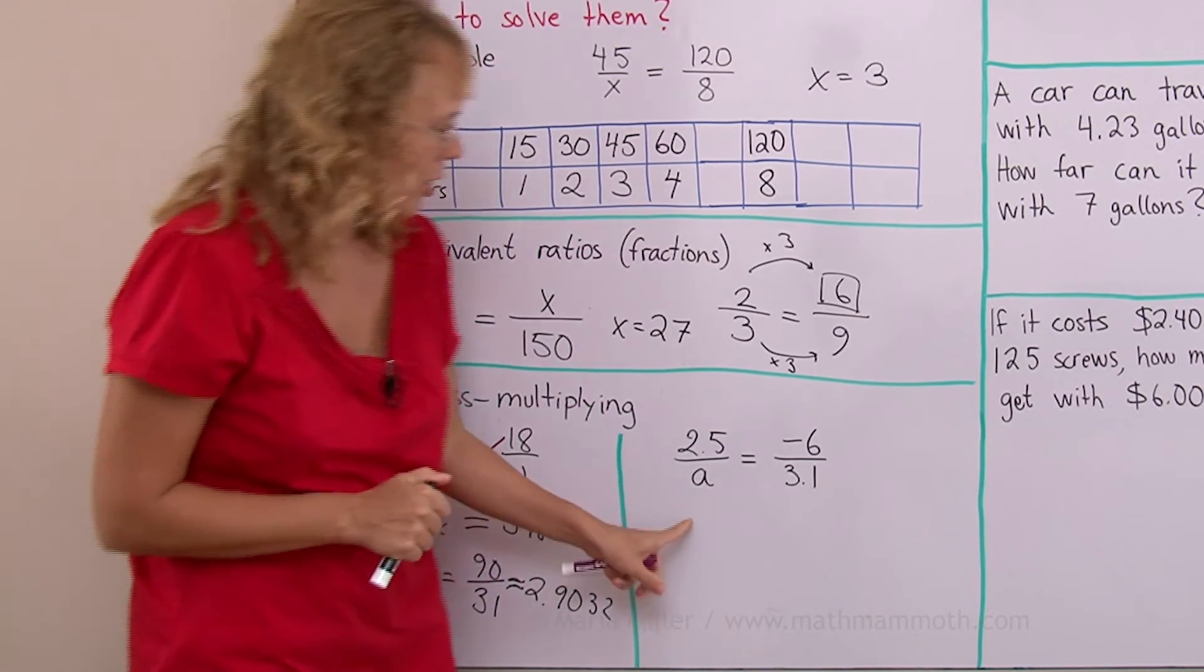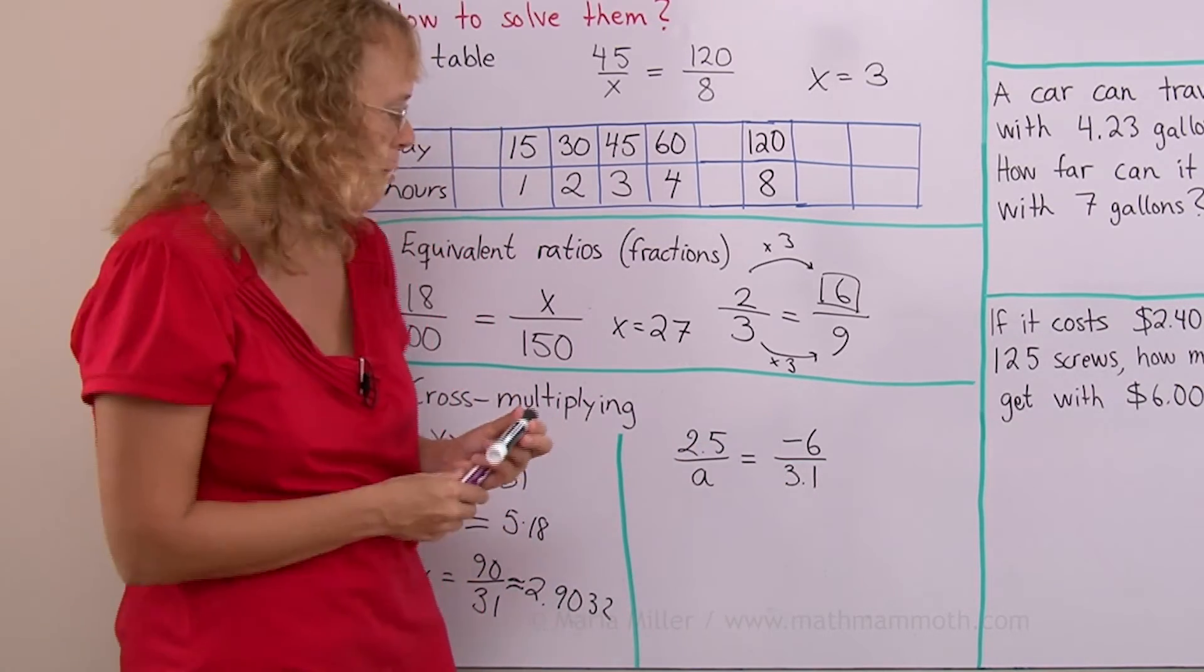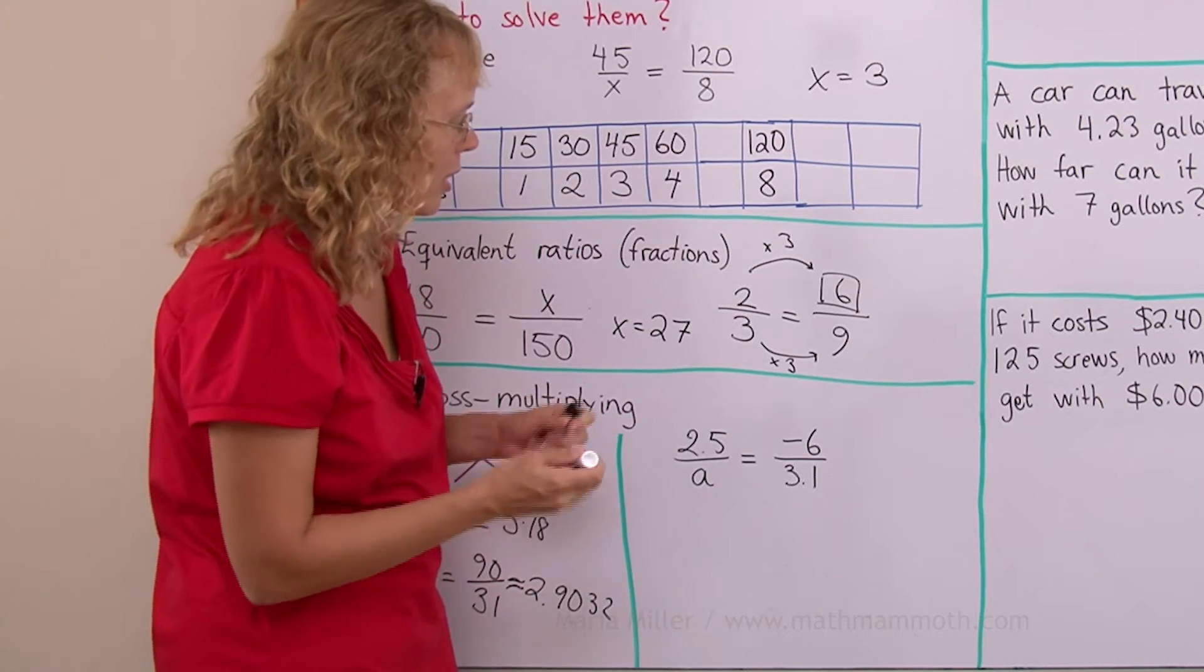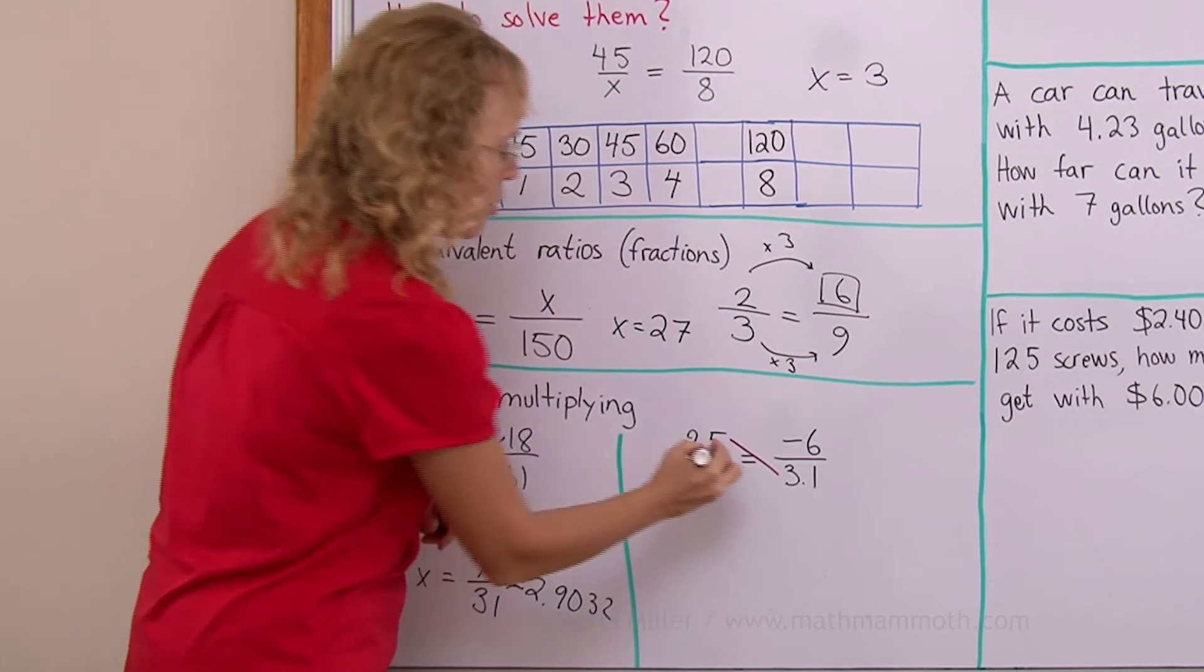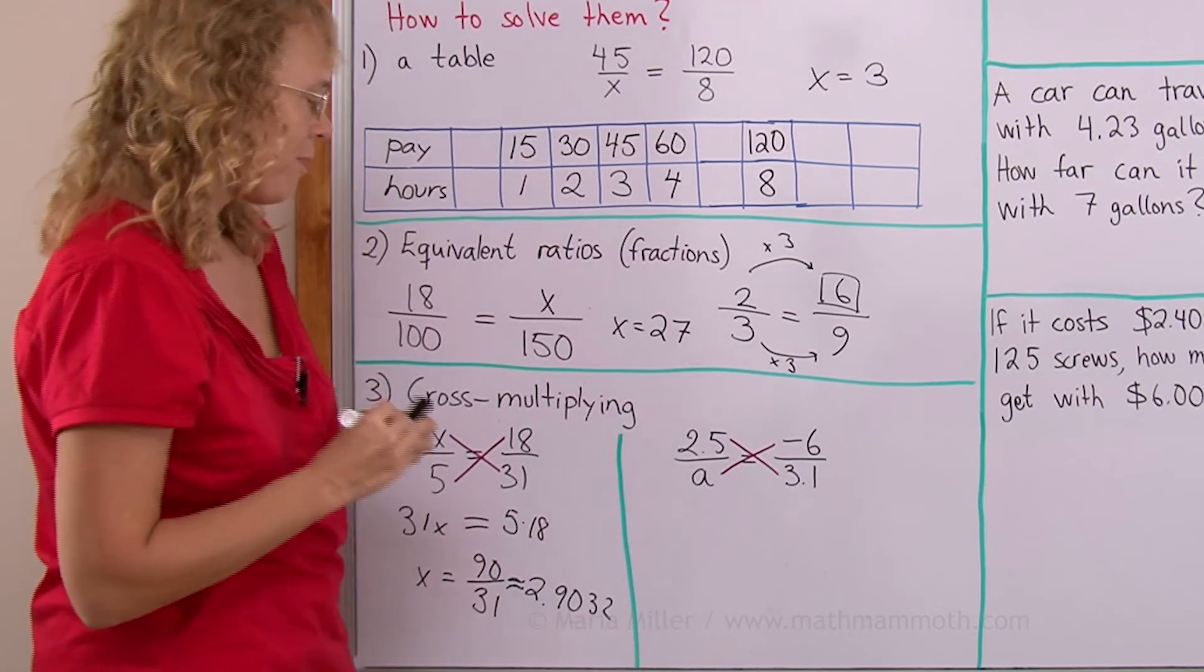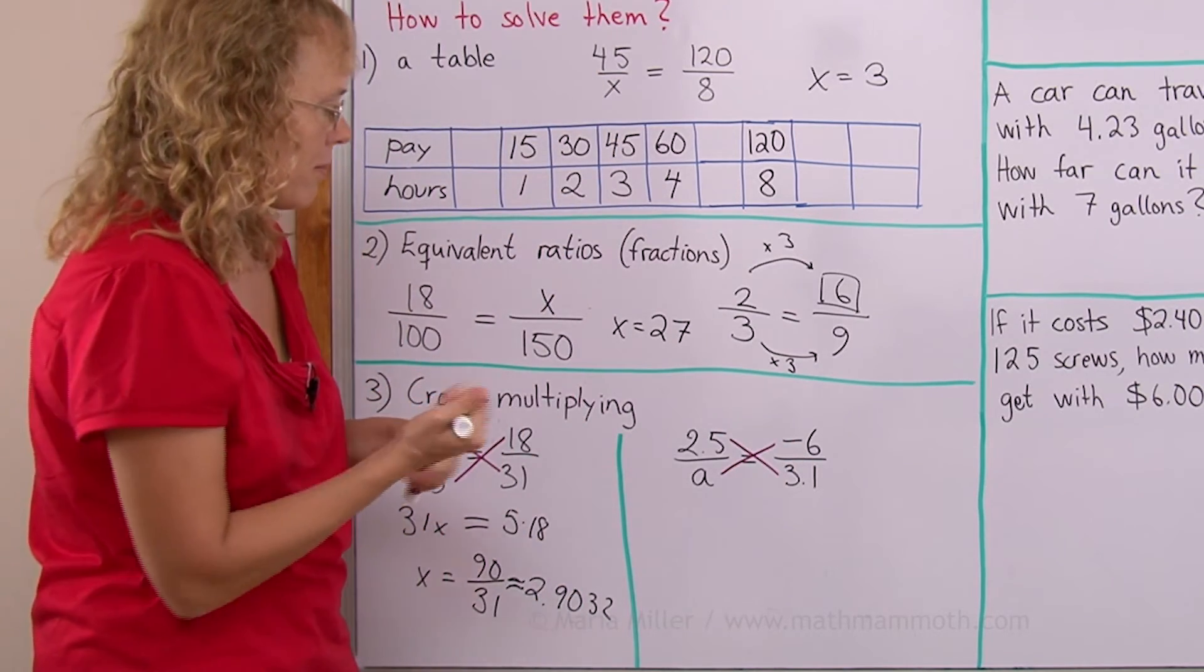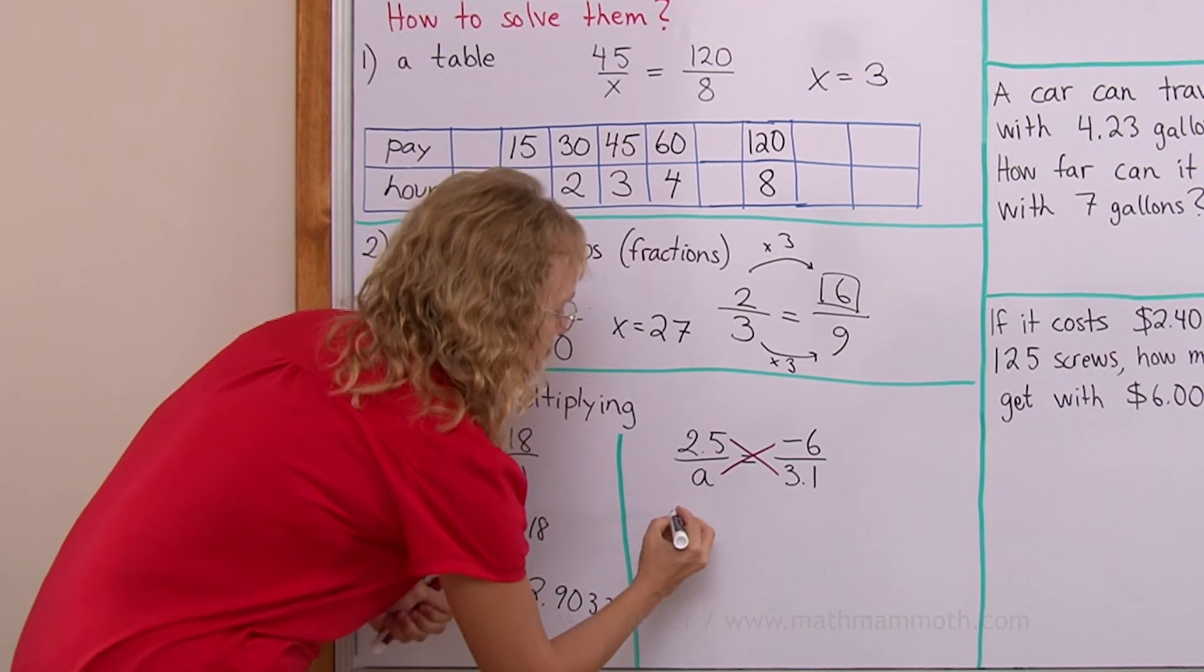I'll solve another proportion here. I just threw together some random numbers. And the principle is the same. No matter whether the numbers are negative, it still works. You multiply those two and you multiply those two. And of course, you can write them, for example, this way.